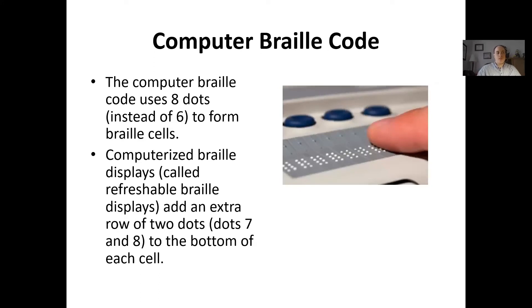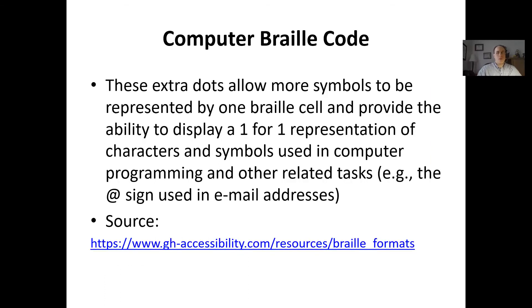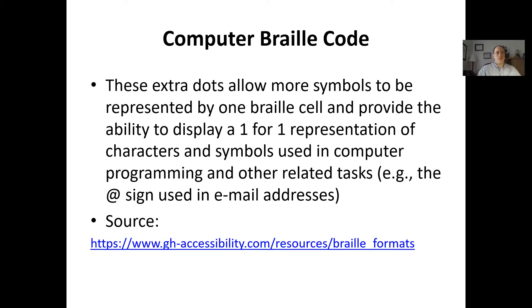The computer braille code is another one that's good to know about. It's used mainly on computerized braille displays, which are called refreshable braille displays. You might see these on your student's devices, such as braille note takers, a BrailleNote, or a Braille Sense. In the computer braille code, there are two extra dots added to the braille cell — dots seven and eight. By using these extra dots, the single braille cell can represent more characters because you have eight dots to work with instead of six.